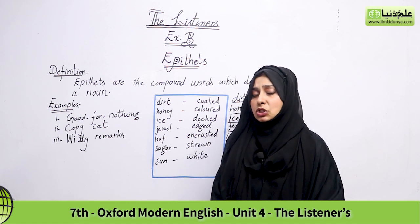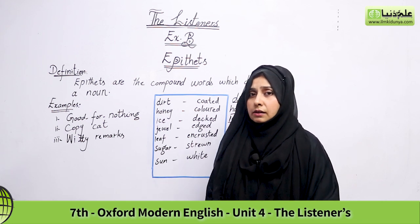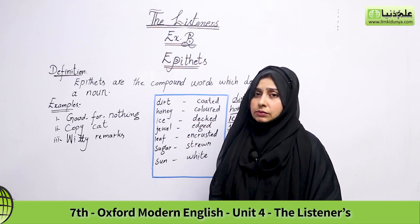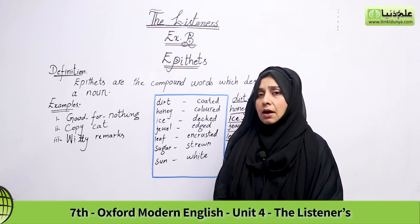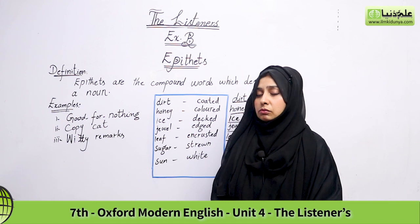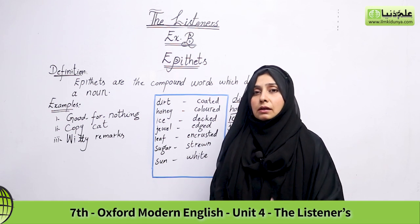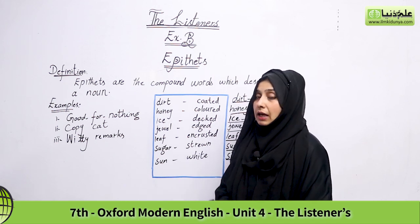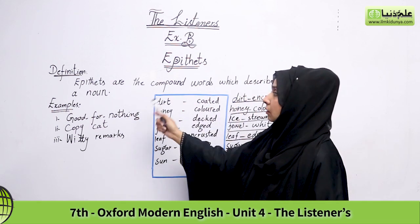Now, to describe a noun, we give it a good name or a bad name. When we give a good or bad name, we call it a title, a nickname, or a pet word. This makes it easy for that person's name or that place's name to gain fame or be easily understood and remembered in that person's mind. So, epithets are compound words which describe a noun.